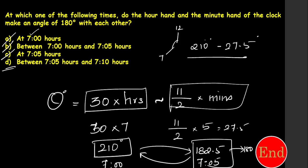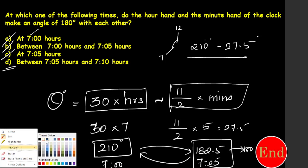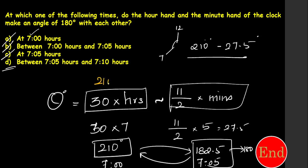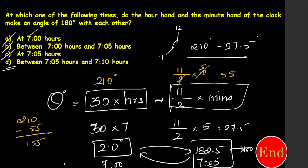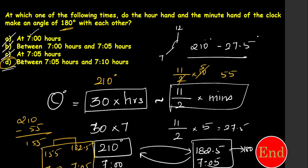Go for option D — 7:10. At 7 o'clock it is 210 degrees. For 10 minutes: 11 over 2 times 10, if I simplify that gives 55. So 210 minus 55 equals 155 degrees. So at 7:00 it is 210, at 7:05 it is 182.5, and at 7:10 it is 155. From 7:05 to 7:10 the angle goes from 182.5 down to 155, so 180 degrees lies in that range. The answer is option D.